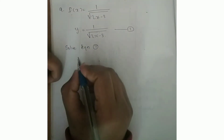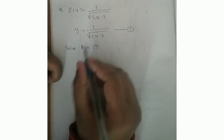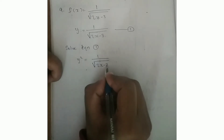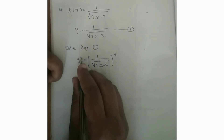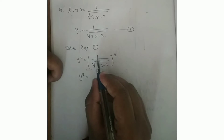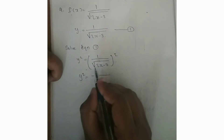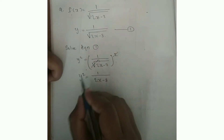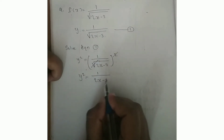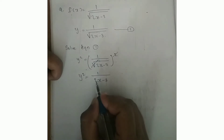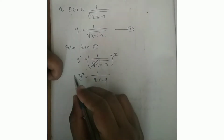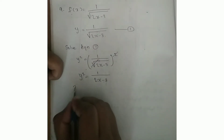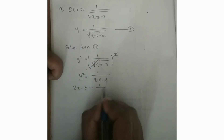In this equation, f of x is equal to 1 by the square root of 2x minus 3. Then y is equal to 1 by the square root of 2x minus 3. Now we solve this equation. Squaring both sides, y squared is equal to 1 over 2x minus 3. So the square root of 2x minus 3 squared gives 2x minus 3. Then y squared equals 1 by 2x minus 3.